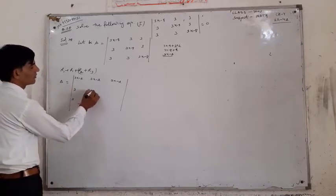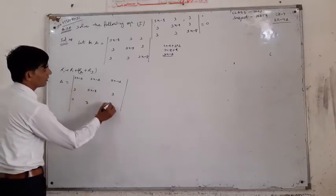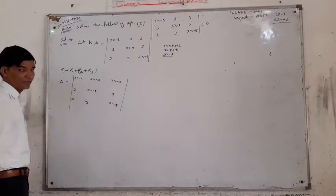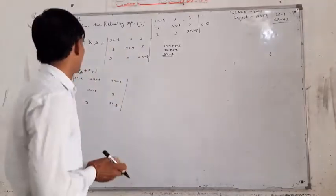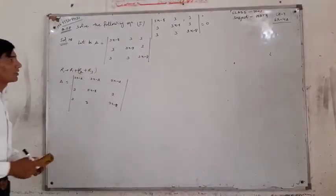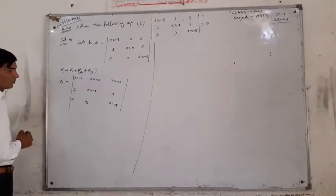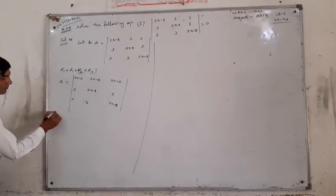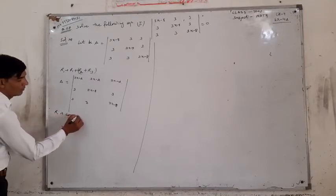3, 3x-8, 3, 3x-8. Clear? Here is — and if you will come to the next one, then you will come to the next one. Now, I will take 3x-2. R1 is the next one.